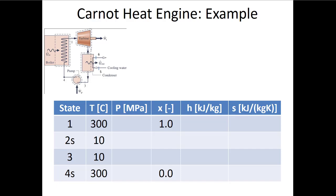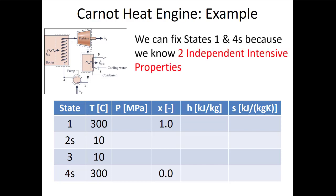We want to find the thermal efficiency of this cycle and compare it to the ideal Carnot thermal efficiency. I like to make state tables because to fix a state I need two independent intensive properties, and the table tells me where to start — the states where I already know two things.